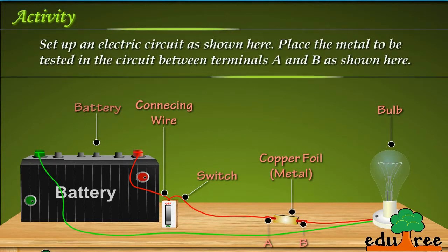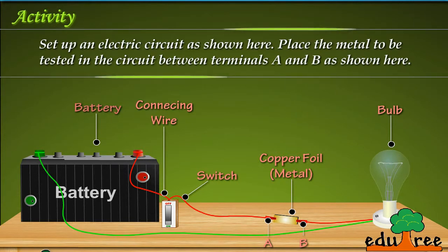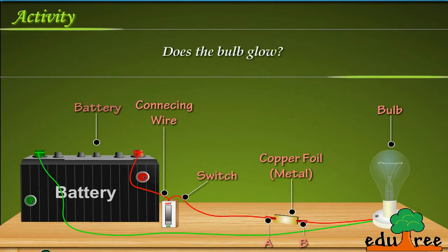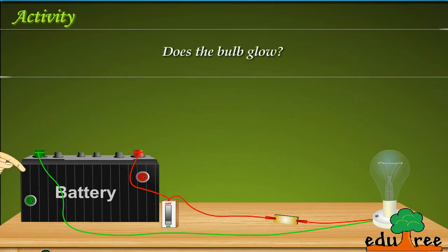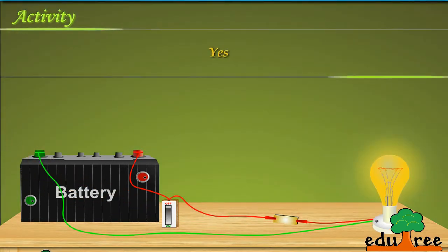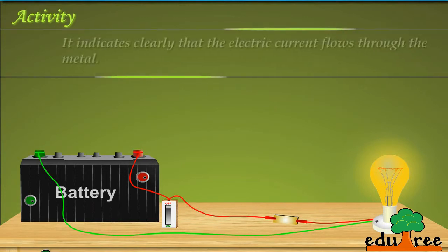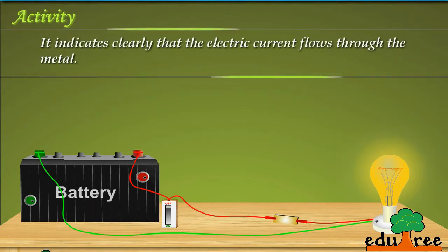Set up an electric circuit as shown here. Place the metal to be tested in the circuit between terminals A and B as shown here. Does the bulb glow? Yes. What does this indicate? It indicates clearly that the electric current flows through the metal.